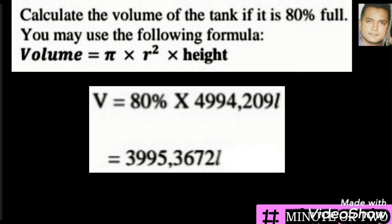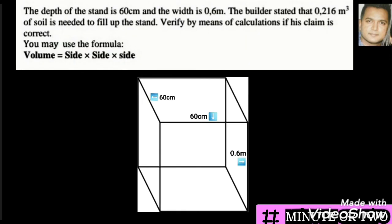When we have mm³, cm³, or m³ it is volume; when we convert to liters, milliliters, or kiloliters it is called capacity. The depth of the stand is 60 centimeters and the width is 0.6 meters. The builder stated that 0.216 m³ of soil is needed to fill up the stand — verify by means of calculations if his claim is correct, using the given formula.